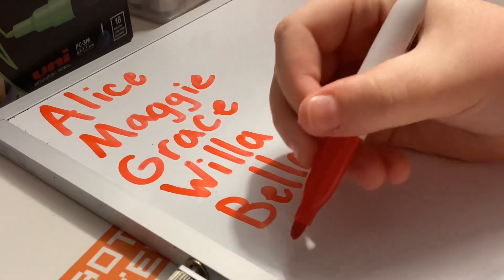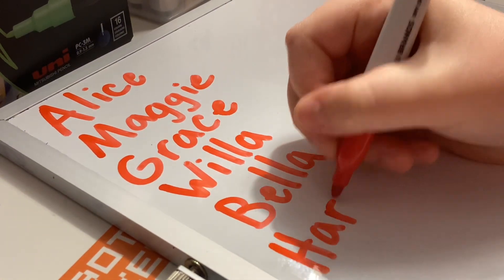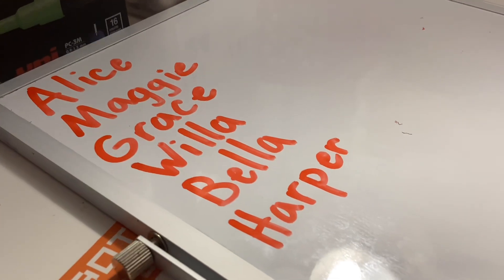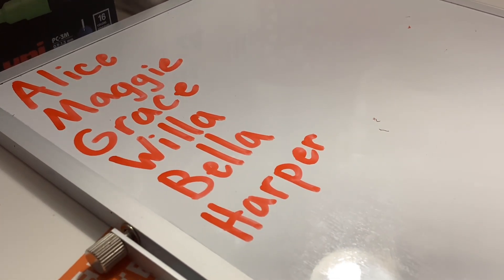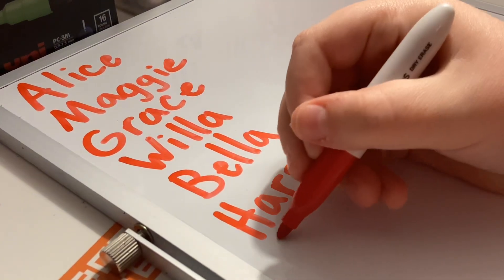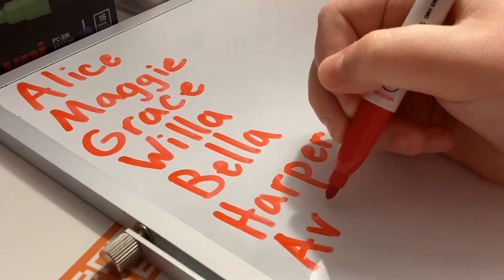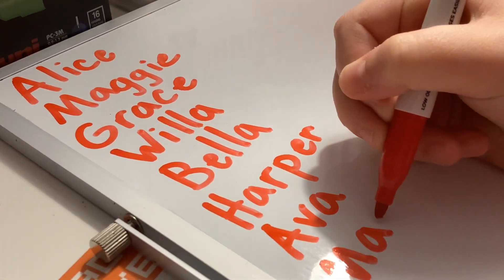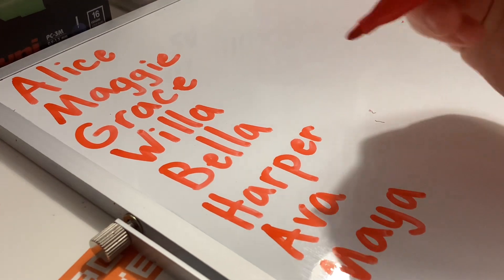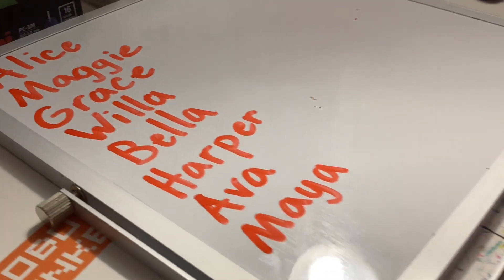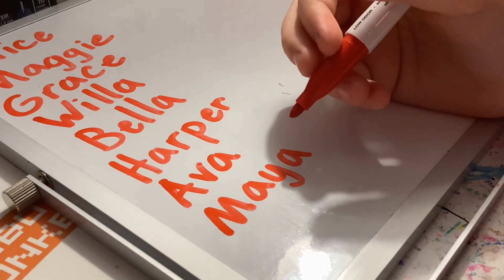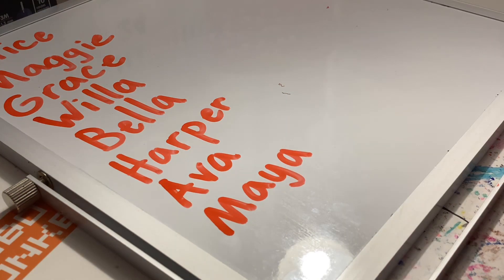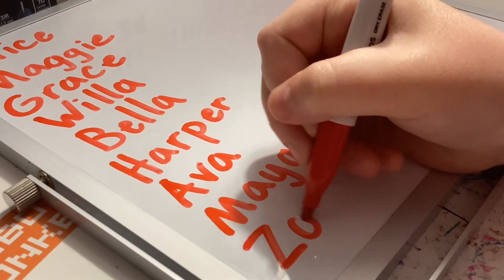And then the next is Bella. Bella is B-E-L-L-A. And then now is Harper, which is H-A-R-P-E-R. Harper. And then Ava is A-V-A. And then Maya, which is M-A-Y-A. Maya. Let me move the camera so you guys can see.